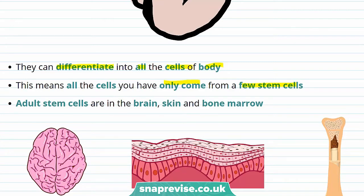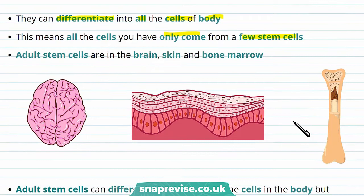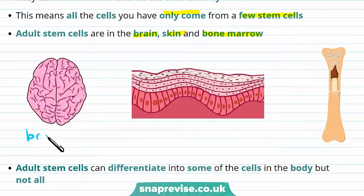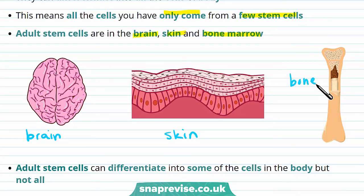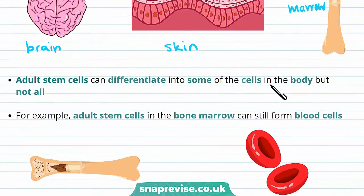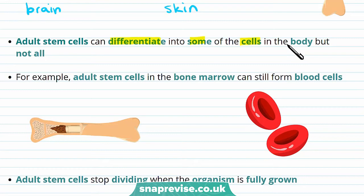Now let's talk about the second type of stem cell: adult stem cells. Adult stem cells are found in a few different places, and these include the brain, the skin, and the bone marrow. Stem cells in the brain help produce the cells you need for normal brain function, the stem cells in your skin help produce skin cells needed for repair if you get hurt, and stem cells in the bone marrow help produce red blood cells. A key difference between adult stem cells compared to embryonic stem cells is that adult stem cells can only differentiate into some of the cells in your body, but definitely not all of them.